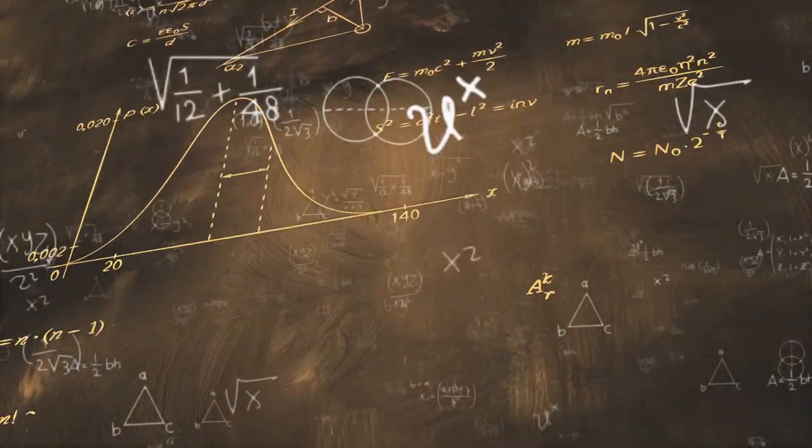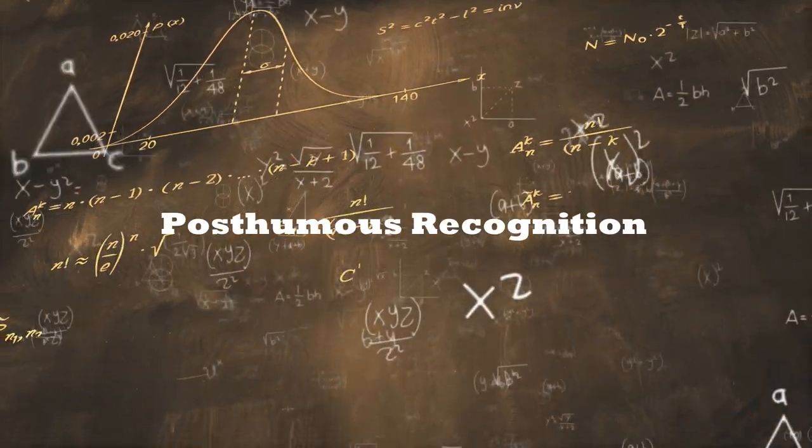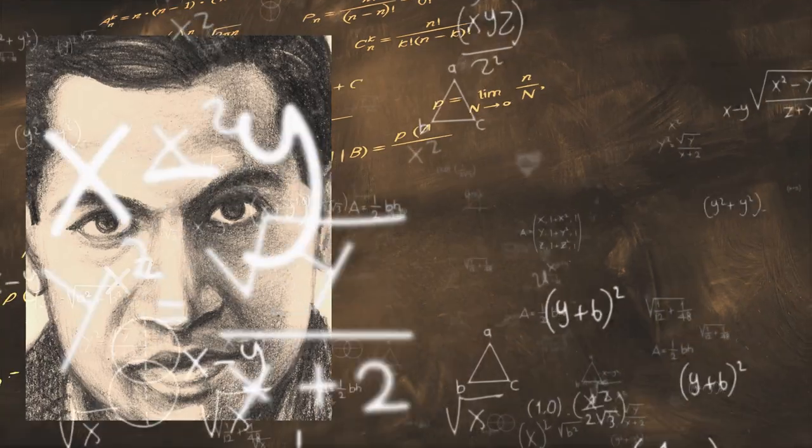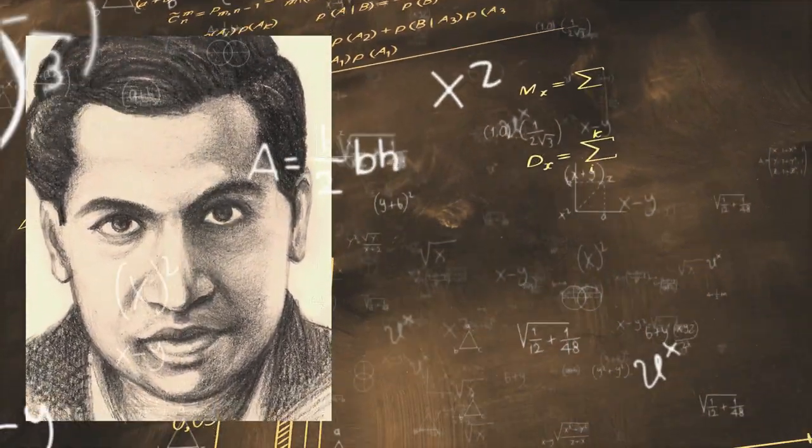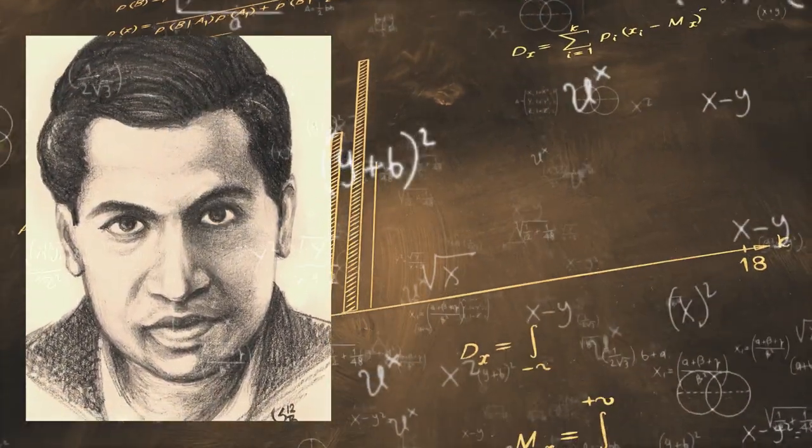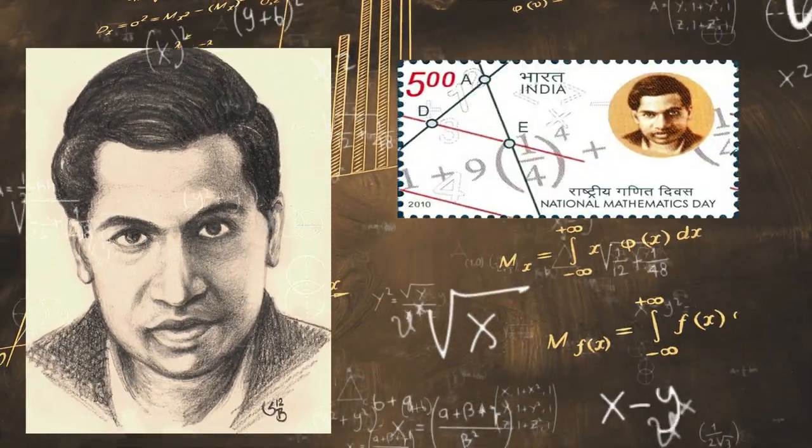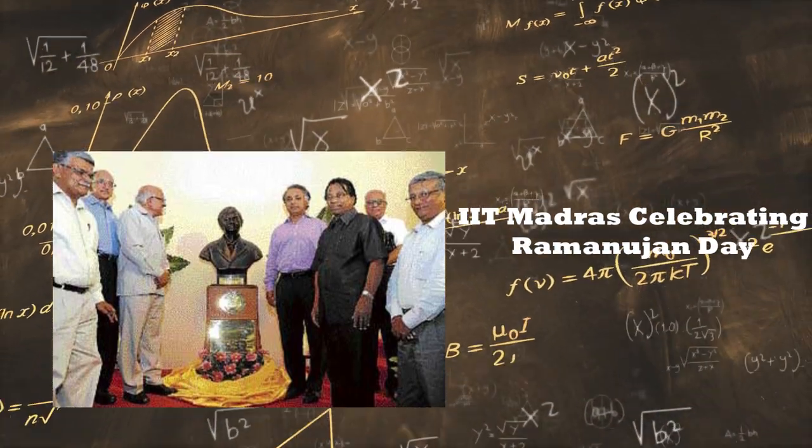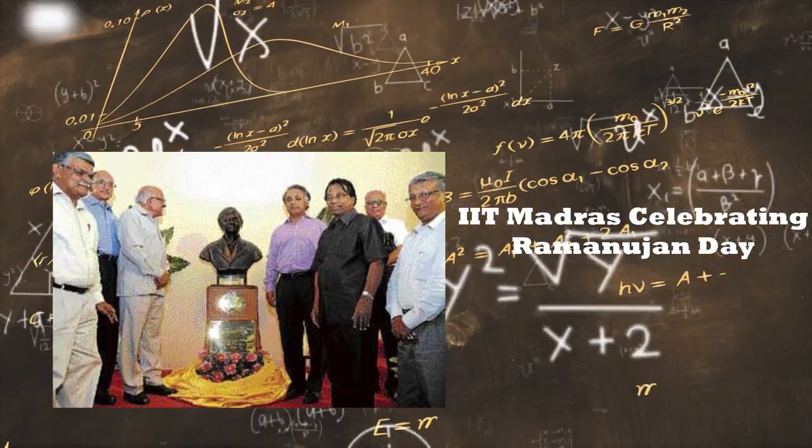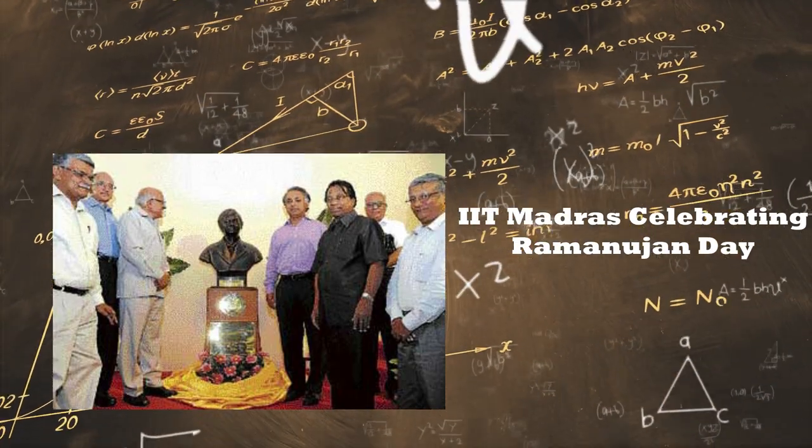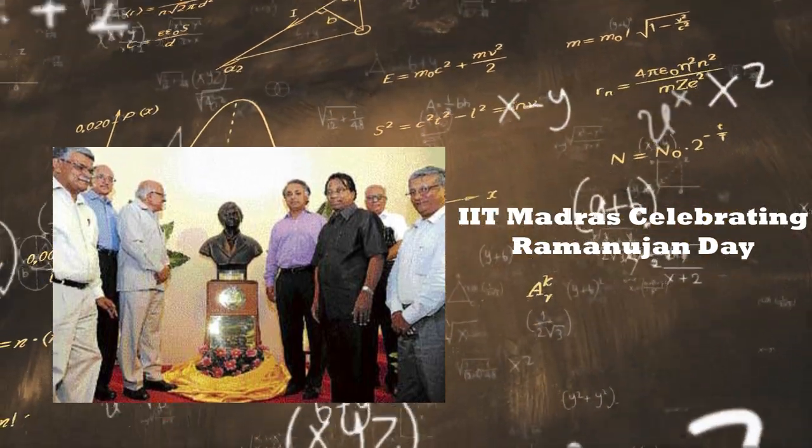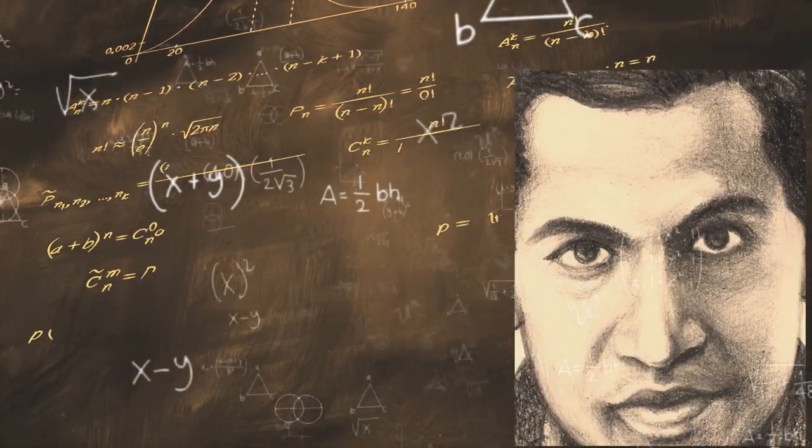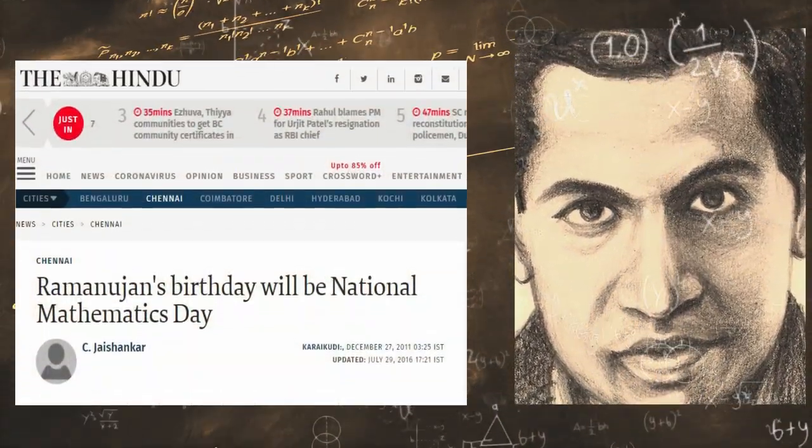Posthumous recognition: 22nd December is celebrated as State IT Day in Tamil Nadu. On his 75th birthday anniversary, the Government of India released a stamp picturing Ramanujan. Government Arts College Kumbakonam, where he studied, and IIT Madras in Chennai celebrate 22nd December as Ramanujan Day. In 2011, the Government of India declared 22nd December as National Mathematics Day. In the year 2012, the Prime Minister of India, Mr. Manmohan Singh, declared the year as National Mathematics Year.